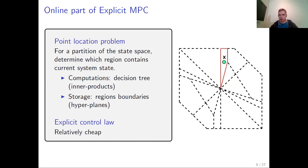The point-location problem is finding the region of state space which contains the current state. Given a set of regions, we evaluate their boundaries to rule out all the critical regions which do not contain the current state, until we uniquely determine one region where we know the optimal solution is a linear function of X. After the region is determined, this is quite cheap to evaluate. However, in a high-dimensional case this might be quite problematic — in fact, this is a bottleneck of explicit MPC. You also have to store all these boundaries for these critical regions.